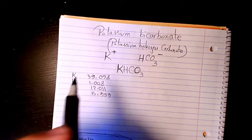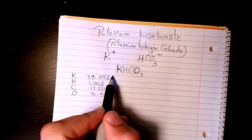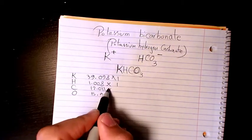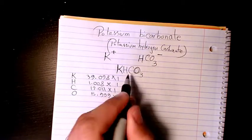How many atoms from each we have? Potassium is just one, hydrogen is just one, carbon is just one, and oxygen we have three of them.